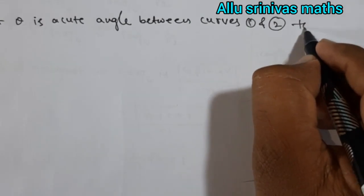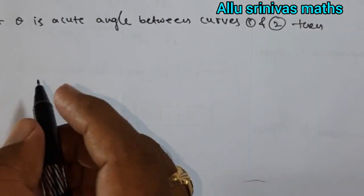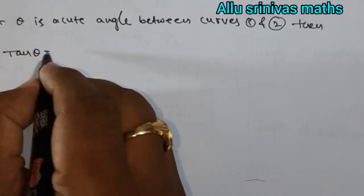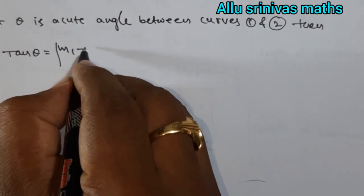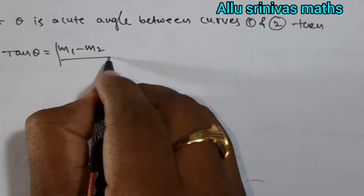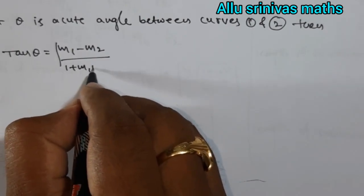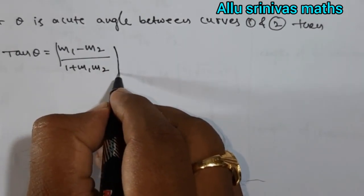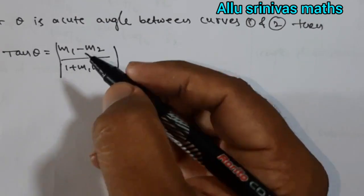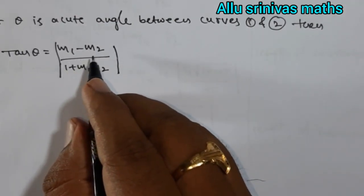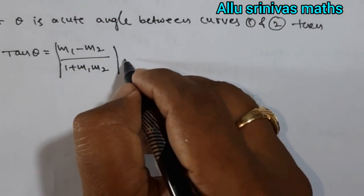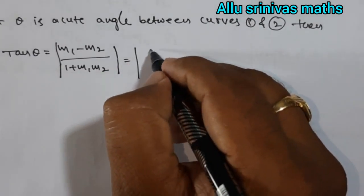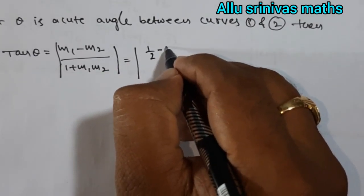Then we know the formula is tan θ = |m₁ - m₂| / (1 + m₁m₂). Already we found the values m₁ and m₂, substitution in this equation. Where m₁ is 1/2, m₂ is -1.